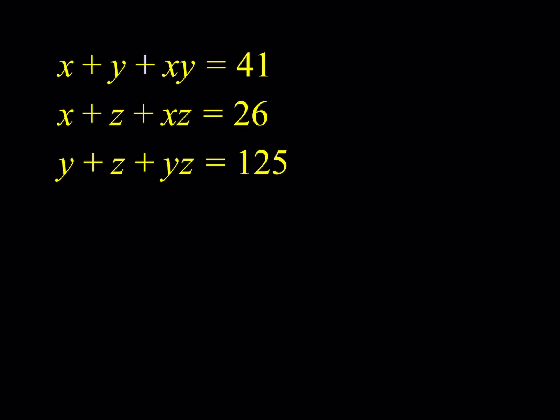We have a system of equations in three variables with three equations, and the equations are pretty consistent with sums being added to products giving us a numerical value every time. I thought about giving you a parametric version using parameters like A, B, C instead of the numbers 41, 26, and 125, but that would complicate things, so I wanted to keep it simpler. This is an interesting set of equations because the solution method involves a nice trick that we use from time to time.